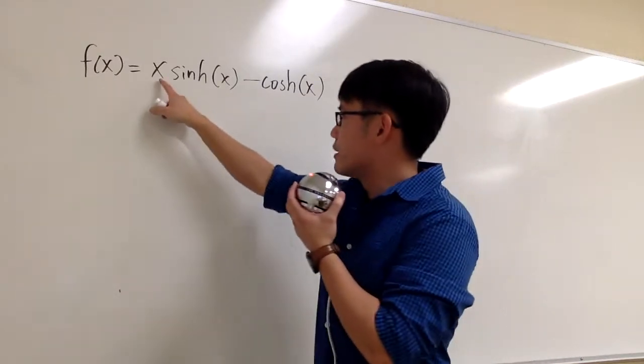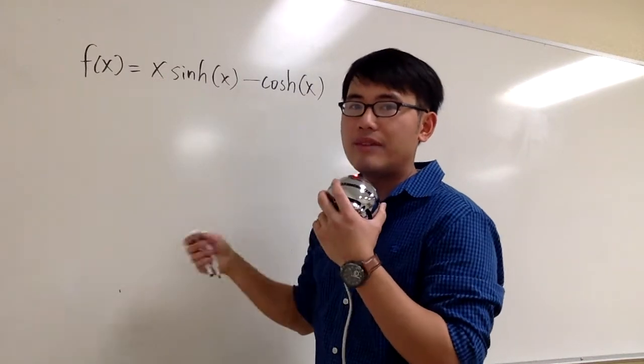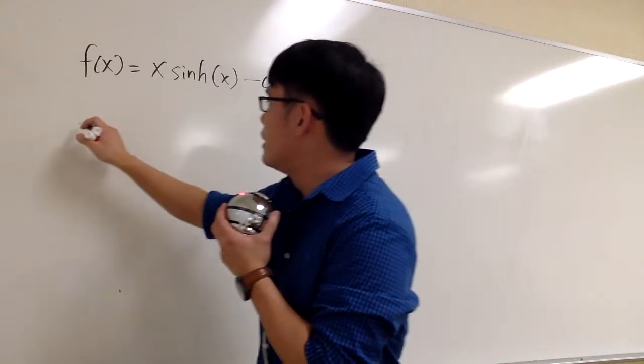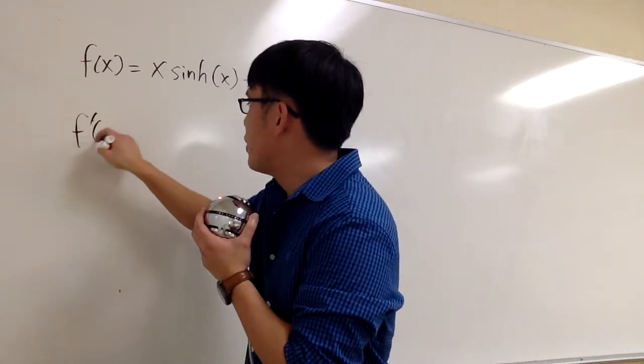For the first part, notice we have x times another function. We have to use the product rule, and let's get to work. f prime of x.